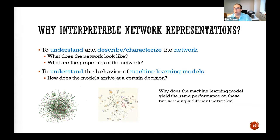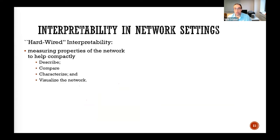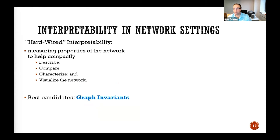Let's talk about some basic ways to hardwire interpretability. You can define a network using a representation that itself provides interpretability. One easy way is to measure something about the network and use that measure to represent it. Of course, this is lossy, but you can compare networks on that measure and visualize it as a one-dimensional point. The best candidates in this case are graph invariants.